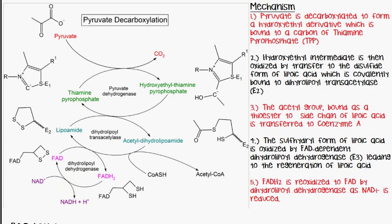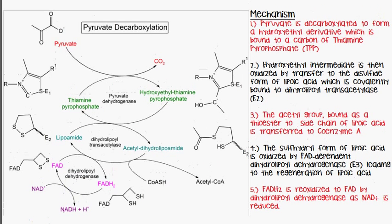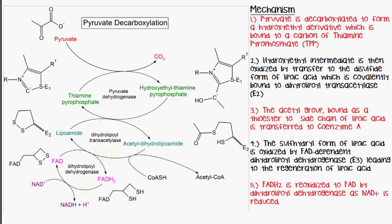That is the basic mechanism. Once this stage is complete, all three enzymes have carried out their function. To recap: E1 is pyruvate dehydrogenase, E2 is dihydrolipoyl transacetylase, and E3 is dihydrolipoyl dehydrogenase — each having their own cofactors as mentioned above.